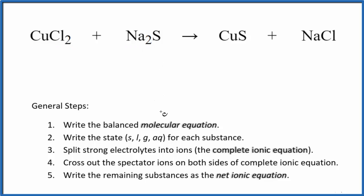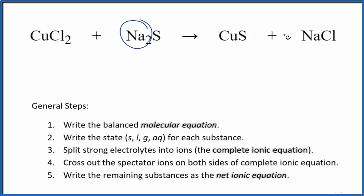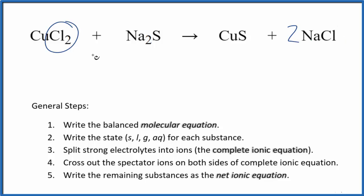The first thing we need to do with net ionic equations is balance the molecular equation. This is our molecular equation. You can see that we have two sodium atoms here and only one here. We put a 2 in front of the NaCl. That balances the sodium. Now we have two chlorines here and two chlorines over here. Everything else is balanced, so we're good. This is the balanced molecular equation.